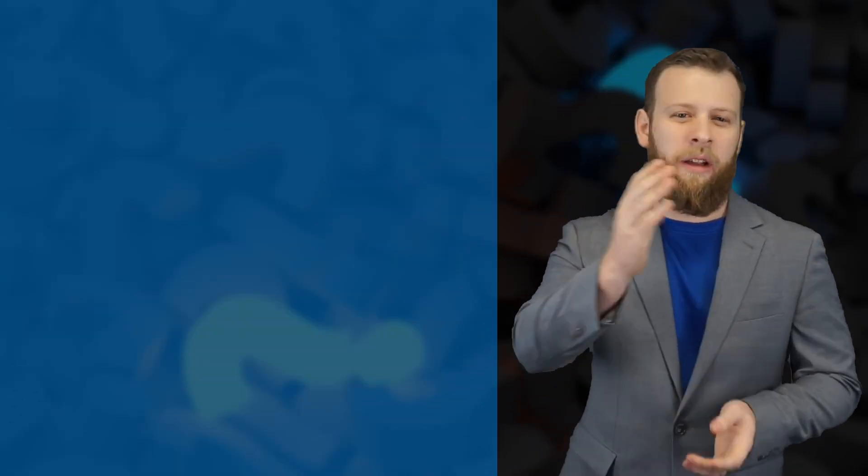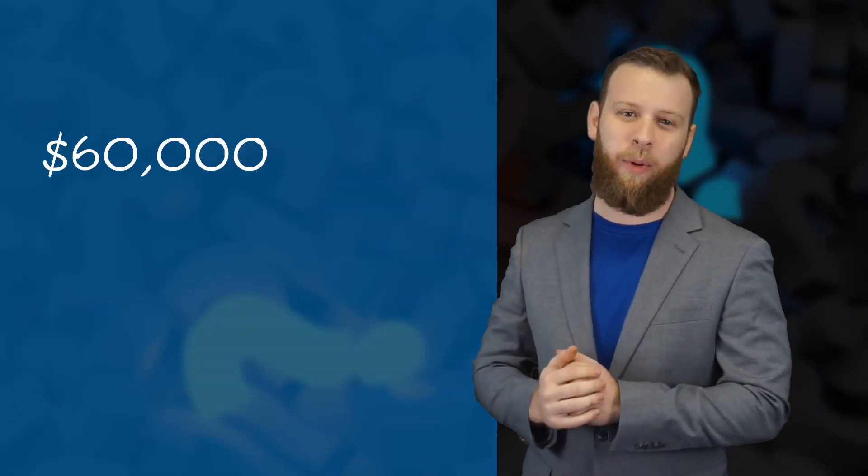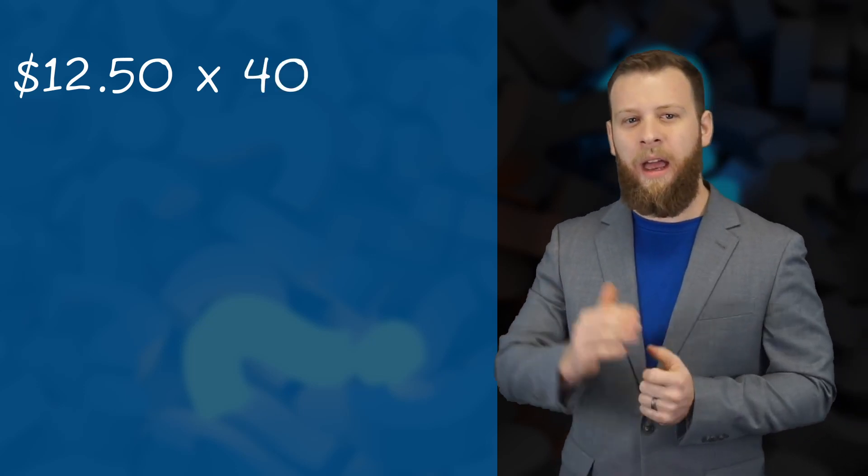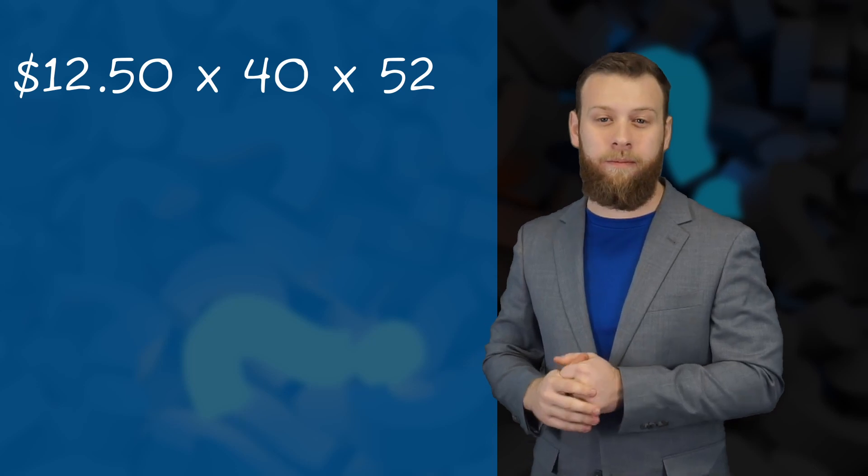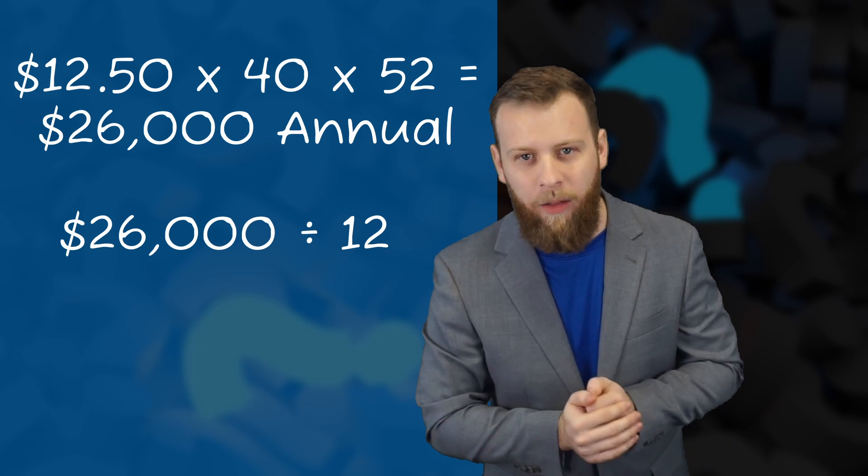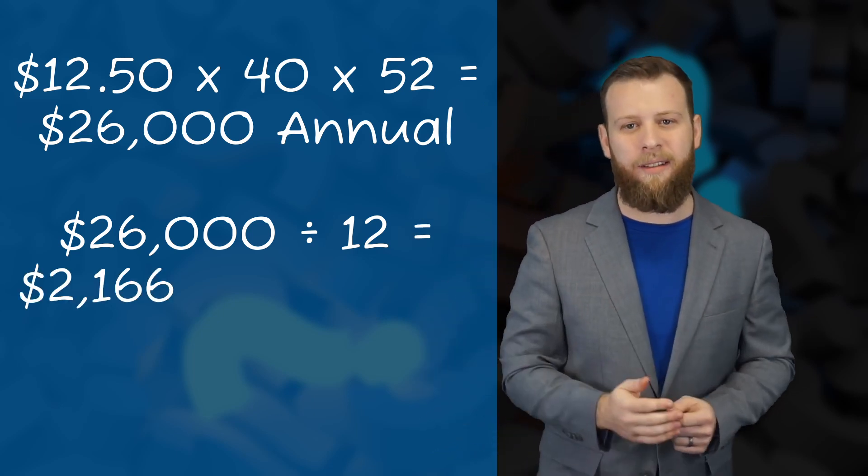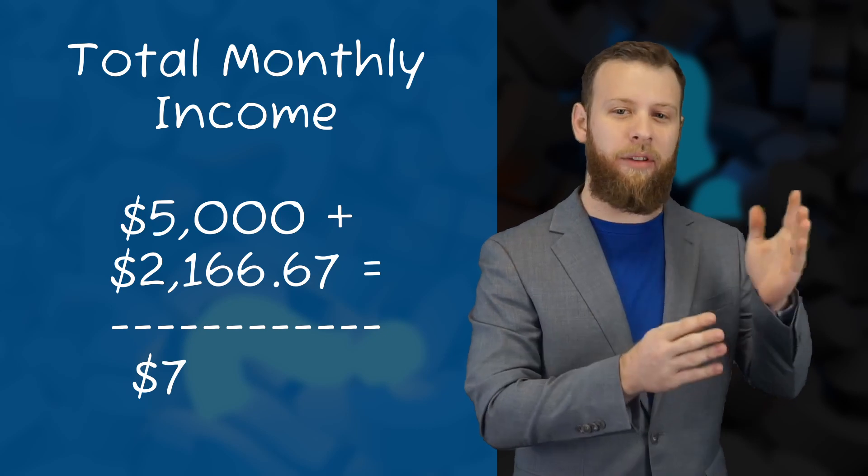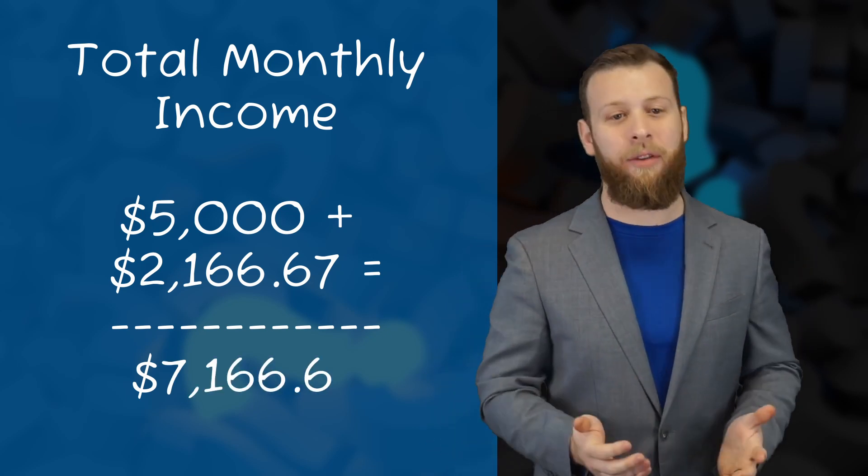Okay so let's go over that. The borrower makes $60,000 per year. When you divide that by 12, you're going to get their gross monthly income of $5,000. For the co-borrower, we'll take their hourly pay rate of $12.50 an hour. We're going to multiply that by 40 hours per week. Multiply that number by 52, we're going to get their yearly income of $26,000. Divide that by 12, we're going to have $2,166.67. Of course, then we're going to add the borrower and co-borrower's income together to get their gross monthly income of $7,166.67.